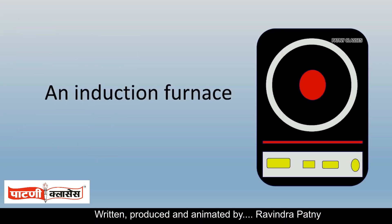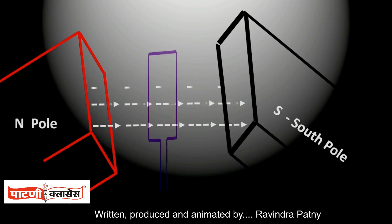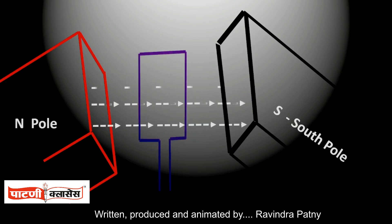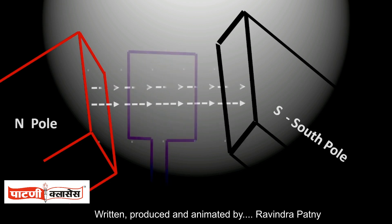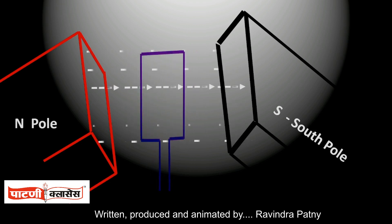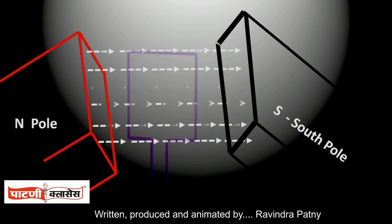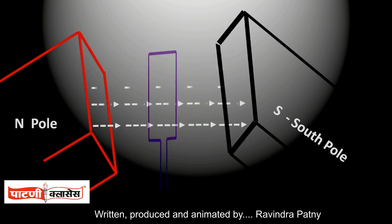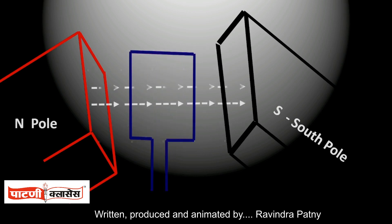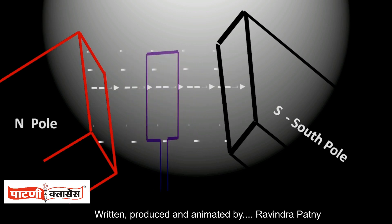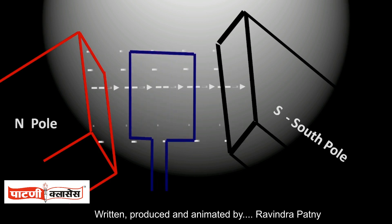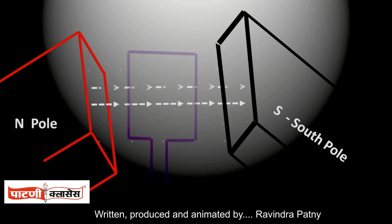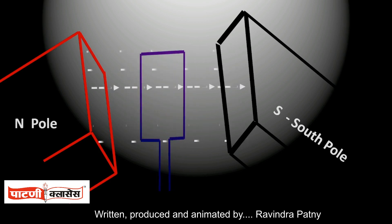The induction furnace is one application. The alternator is another — here the working of the alternator is shown, in which the rotating coil cuts the magnetic flux and EMF is produced in the rotating coil. This is based upon Faraday's laws of electromagnetic induction.